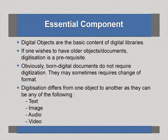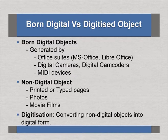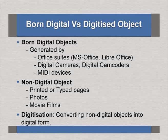Digitization differs from one object to another, as objects can be of different types. In the case of text, digitization is different from the digitization of images, audio files, or video files.